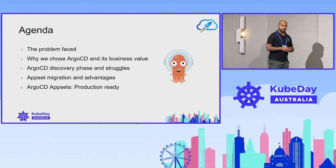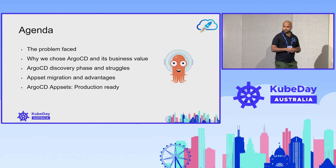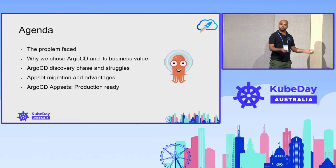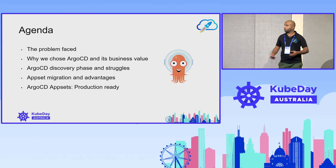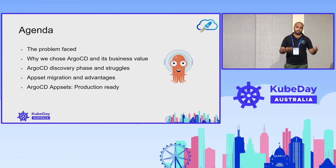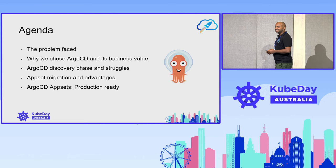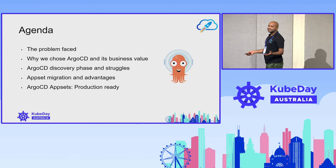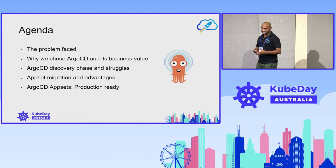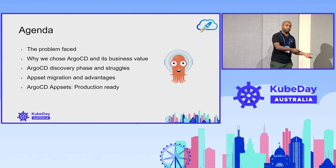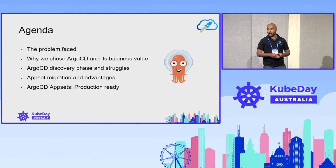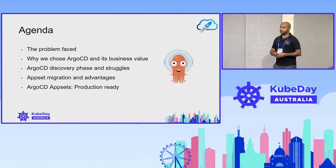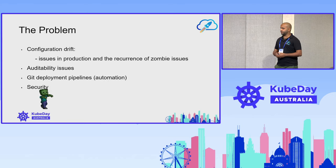Today's agenda covers: what was the problem we faced, why we chose Argo CD, what was its business value, the discovery phase and the struggles we had during it, why we migrated to AppSets after our POC phase, and how to make it production ready.